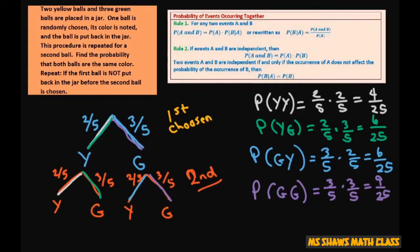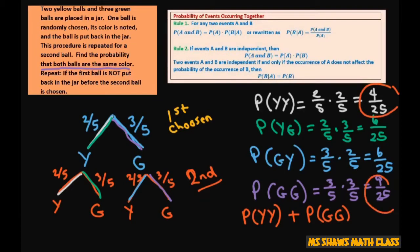Now our question is: find the probability that both balls are the same color. That's going to be either the probability of yellow-yellow or the probability of green-green. 'Or' means to add, so we're adding these two: four twenty-fifths plus nine twenty-fifths, which equals thirteen twenty-fifths.